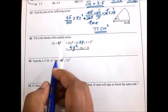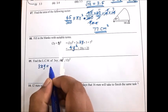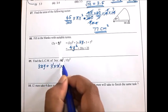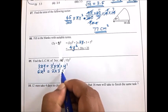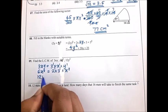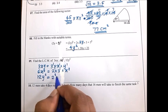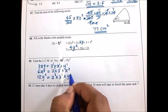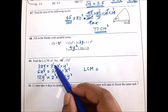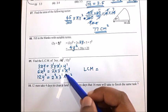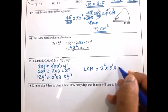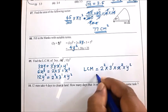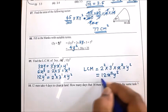Then the 9th question: LCM. First write these expressions as a product of prime numbers. Then take the highest index of each and every different base: 2 to the power 2, 3 to the power 1, x to the power 2, y to the power 2. The answer is 12x²y².